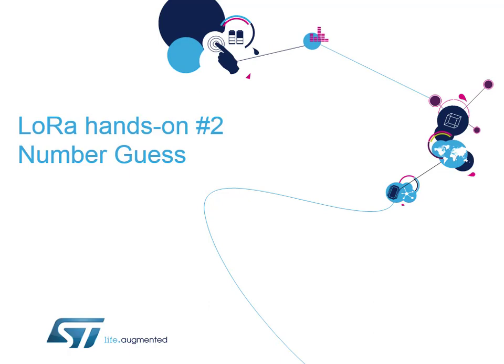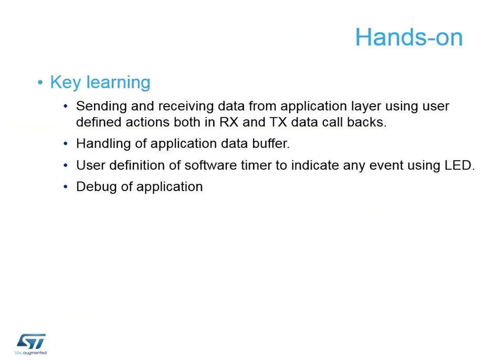We're going to do the second hands-on of the day: the number guessing game. In this hands-on we are going to do a proper embedded system — we're not going to use AT commands as in the first hands-on. We're going to write the code itself, compile it, and load it into our target board through an IDE. We're going to use Keil for this session.